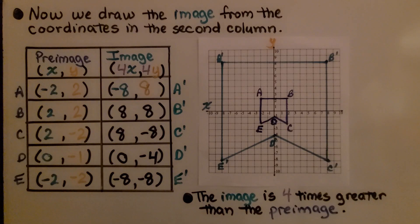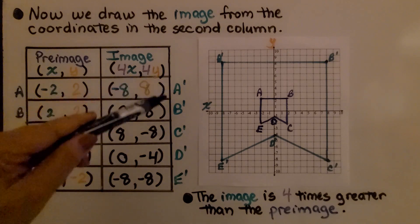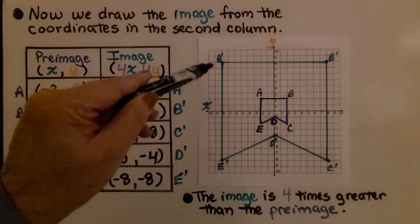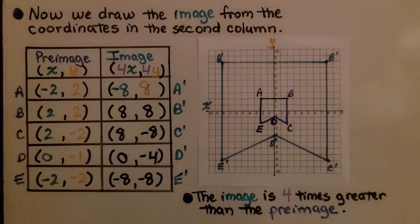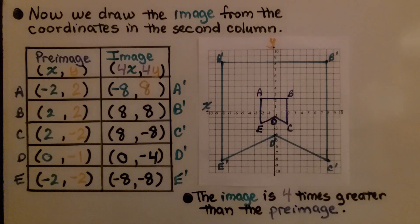Now we draw the image from the coordinates in the second column. We can draw A prime, B prime, C prime, D prime, and E prime. The image is 4 times greater than the preimage. We can see the shape and orientation of the image are the same as the preimage, but the size is different.